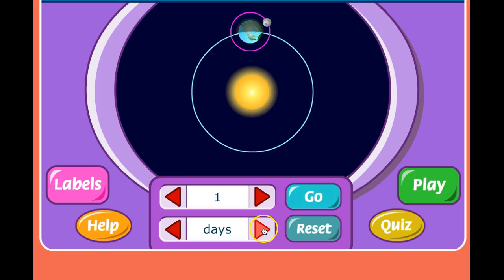Now, let's set it for one month. But before we click go, we'd like you guys to look carefully at where the moon is and where the earth is compared to the sun. So, I'm going to click on go, and together what we can do is we'll count how many times we go around.